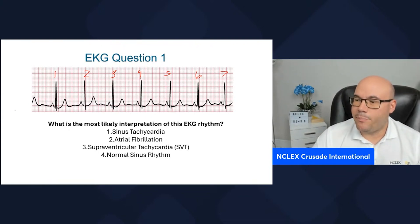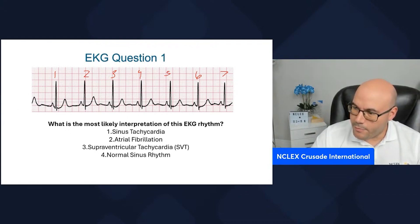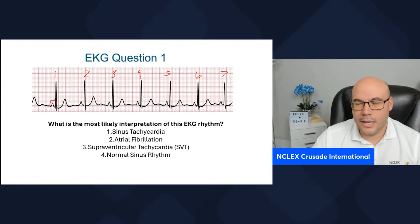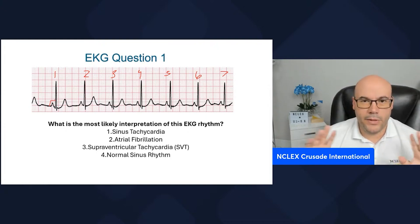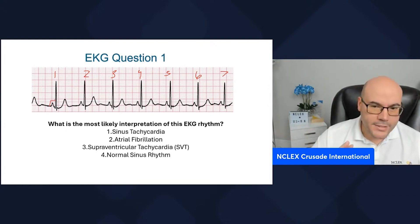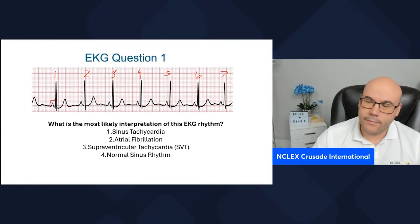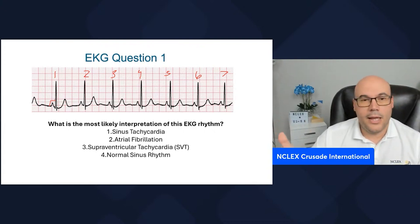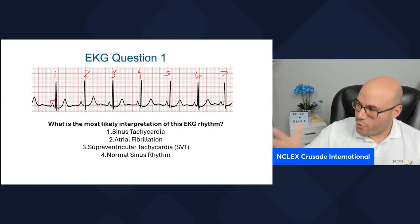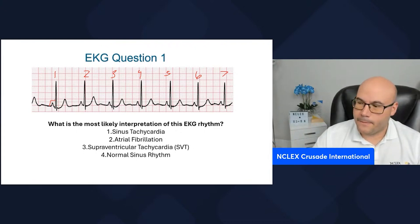Let's look at the PR interval. We measure it from the beginning of the P wave to the beginning of the QRS complex. It should be between 0.12 and 0.20 seconds, which is what we have. The PR interval is normal and it's constant throughout the strip.